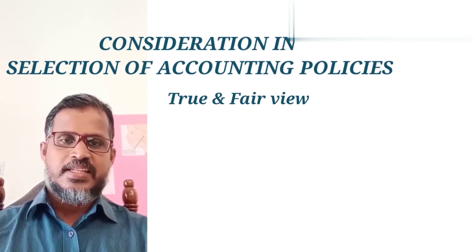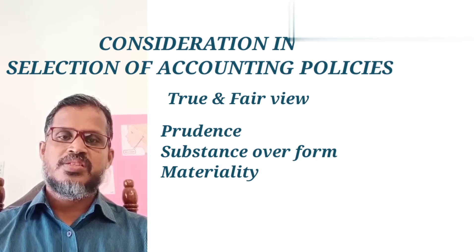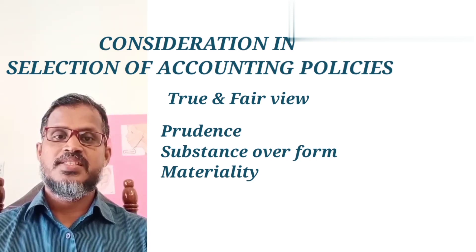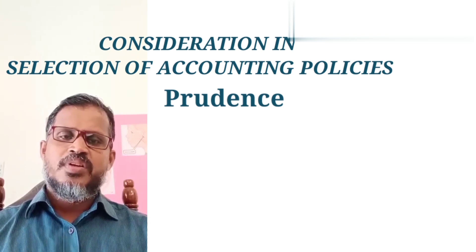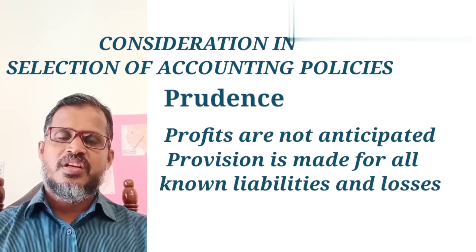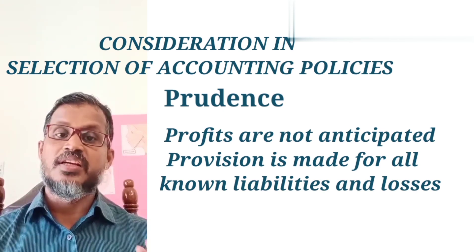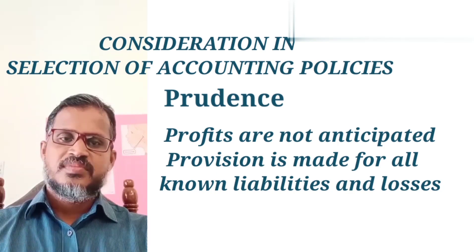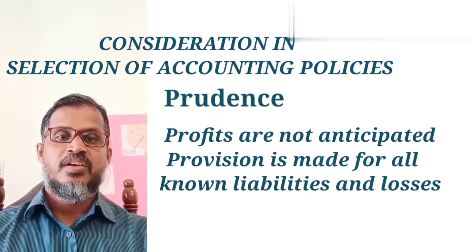There are also other major considerations in the selection of accounting policy: first, Prudence; second, Substance Over Form; and third, Materiality. Under Prudence, also known as Conservatism, we should not anticipate income but we should provide for all possible losses.